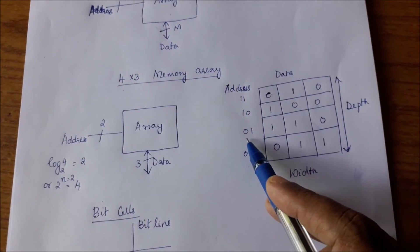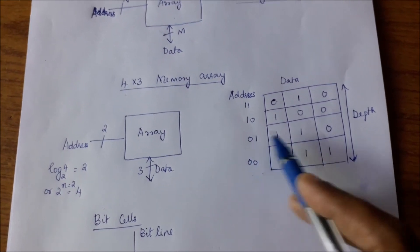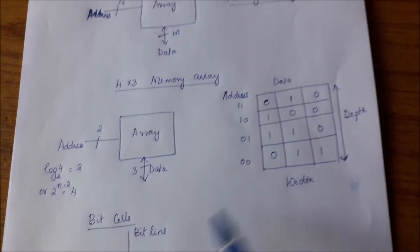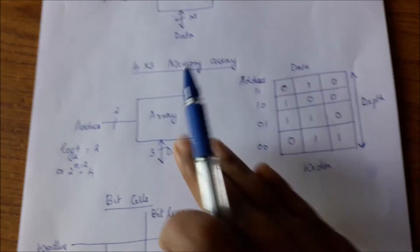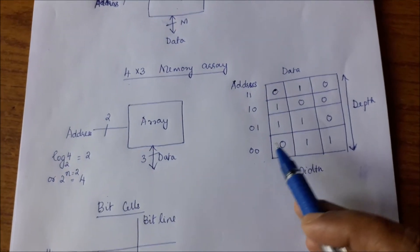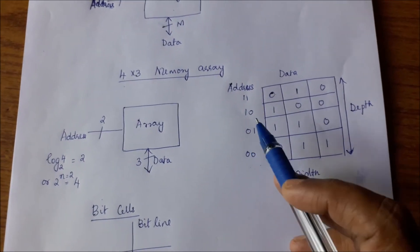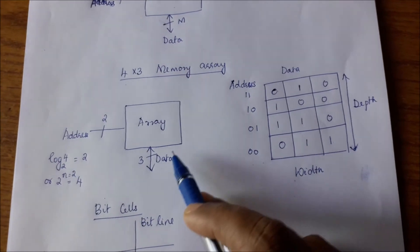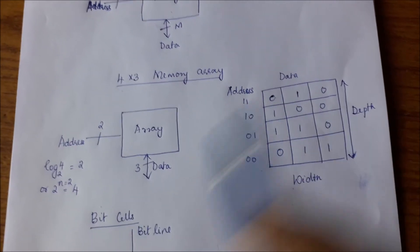Similarly, in data word 1, that is address 0, 1, I have stored 1, 1, 0. This is what is there in this array. So suppose you give an address of, let us say, 1, 0.